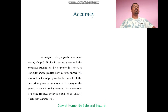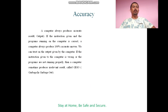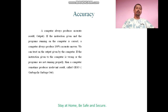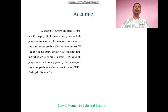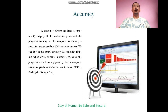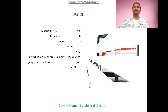A computer always produces 100% accurate answers. We can trust the output given by the computer, as it always produces 100% correct output if the instructions are correct. If the instructions given to the computer are wrong or the programs are not running properly, then the computer sometimes produces irrelevant results, which is termed as 'garbage in, garbage out' — the condition when a computer fails to provide correct output.